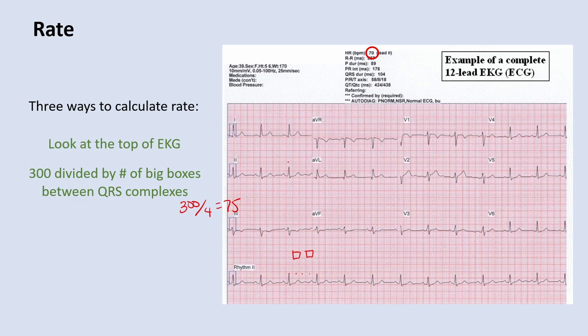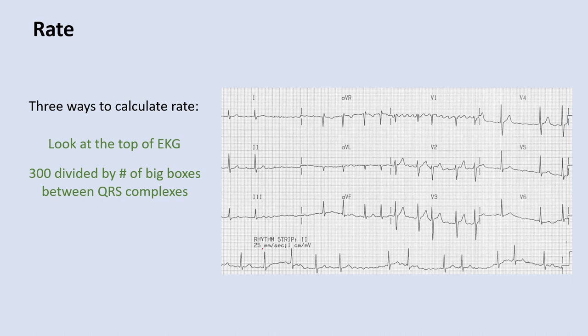Sometimes you have an irregular heartbeat and you can't accurately count big boxes between QRS complexes. So instead, you count every single QRS complex on the rhythm strip — five, six, seven, eight, nine, ten, eleven, twelve — and multiply by six, because the rhythm strip is 10 seconds long. That gives you an approximate heart rate of 12 times 6, or 72 beats per minute. Count QRS complexes in the rhythm strip, usually lead two, and multiply by six.